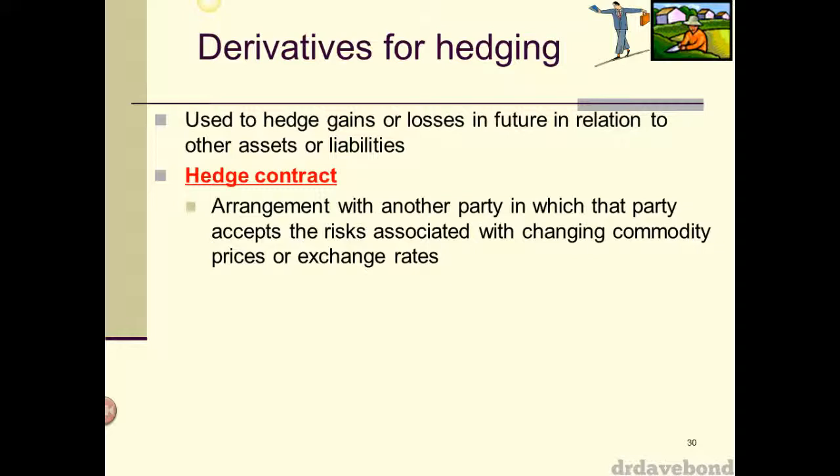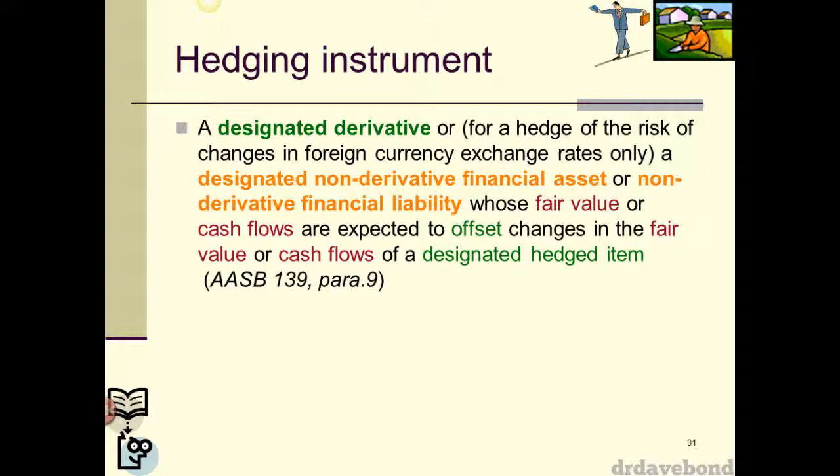The other party could be a speculator or someone with just an opposite position. A designated derivative is something whose fair value or cash flows are expected to offset changes in the fair value or cash flows of the hedged item.